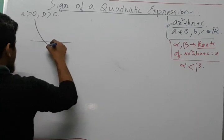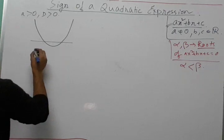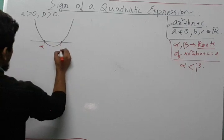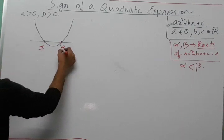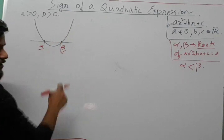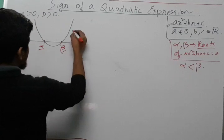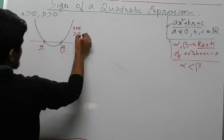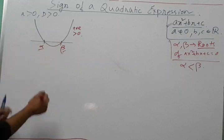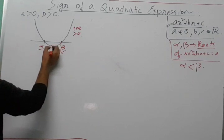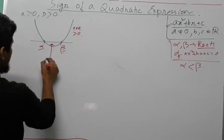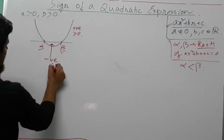If this is the x-axis and this is the curve, we can see that these two points are basically the roots, and here we can denote them as alpha and beta. As you can see, if x is greater than beta, then this portion is basically positive, or greater than 0. Now in between alpha and beta, if we take x lying between alpha and beta, then the quadratic expression is negative, since it is below the x-axis.